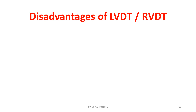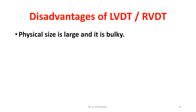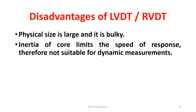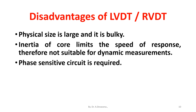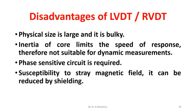The disadvantages of LVDT are: physical size is large and bulky; inertia of the core limits the speed of response, making it not suitable for dynamic measurements; a phase sensitive circuit is required; and susceptibility to stray magnetic fields, which can be reduced by shielding.